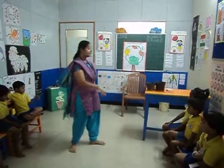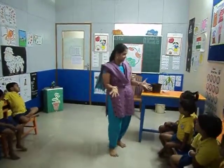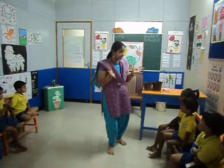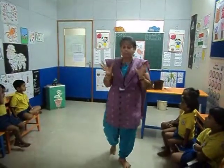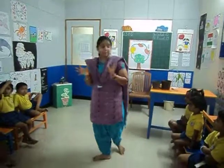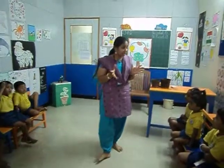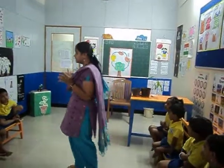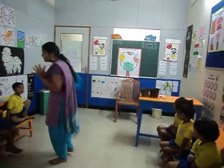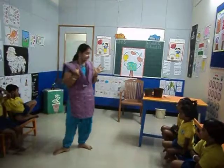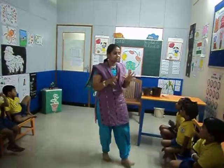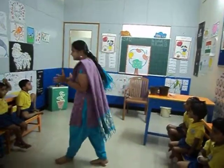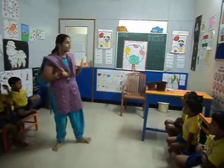Different fruit have different types of seeds. Seeds come in many kinds — apple has many black seeds, papaya has many black seeds, sapota also has many black seeds. Different fruits have many different types of seeds. Have you all eaten mango?